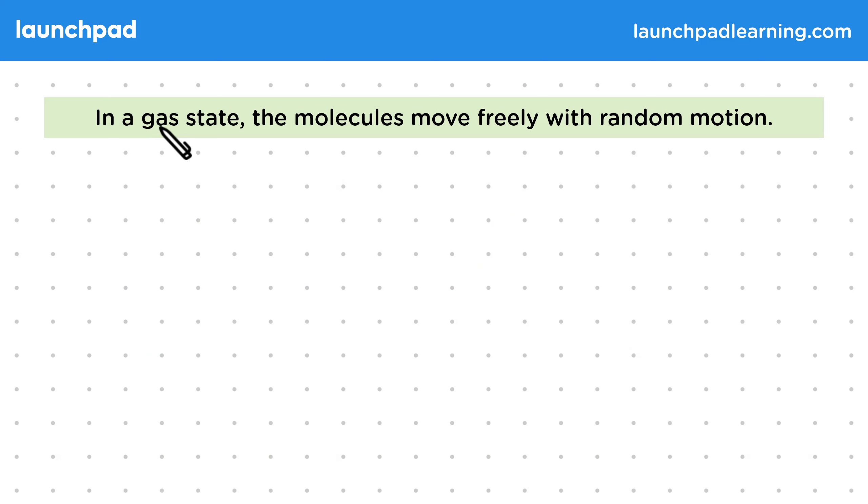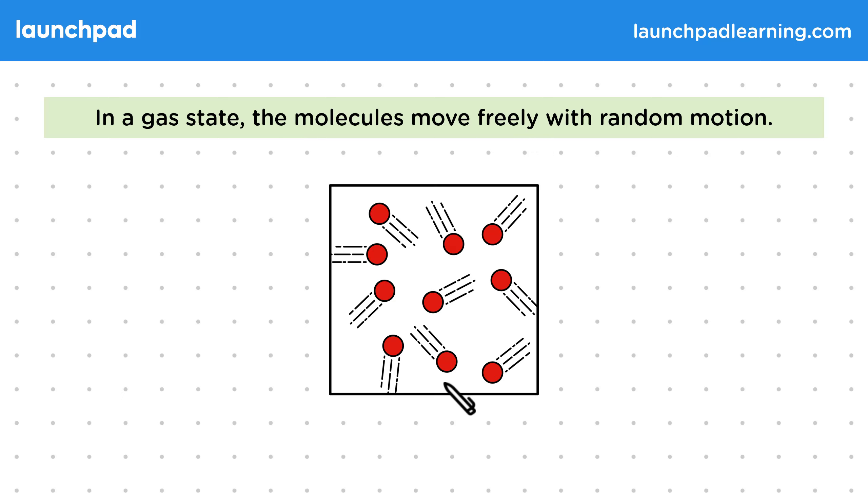And finally, in a gas state, the molecules move freely with random motion. Remember, this is when the intermolecular bonds are broken, allowing the molecules to separate and travel around a container.